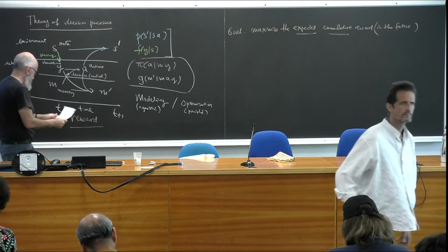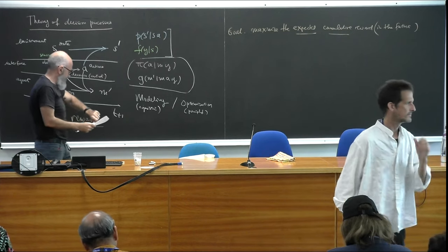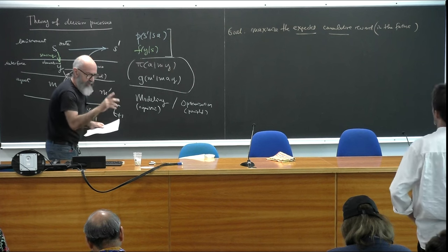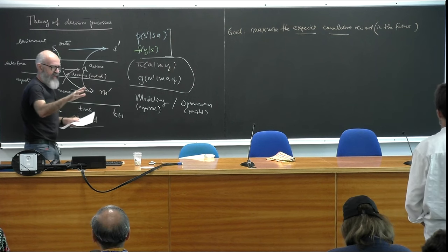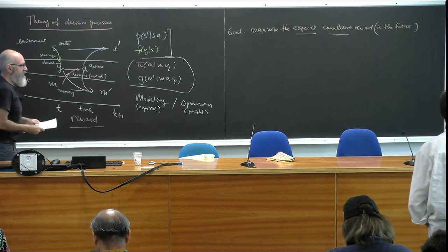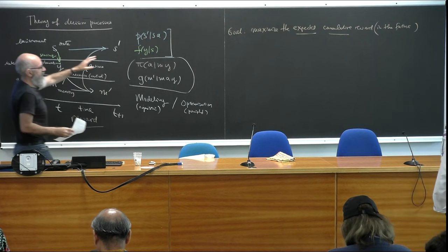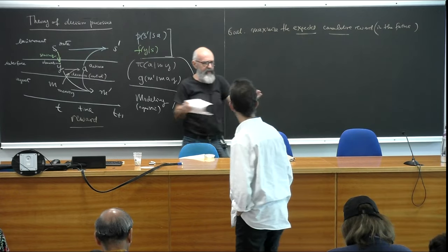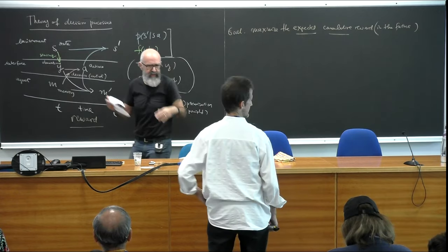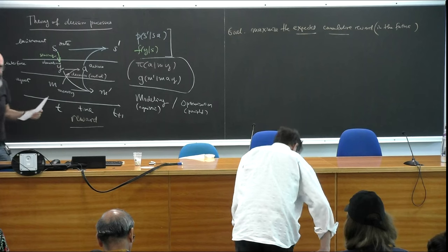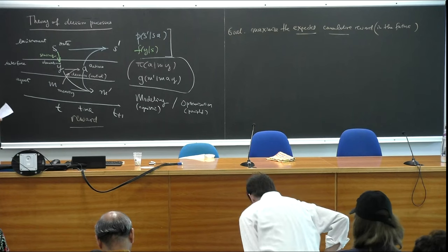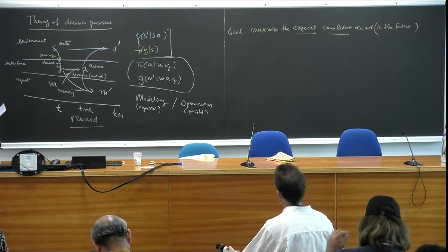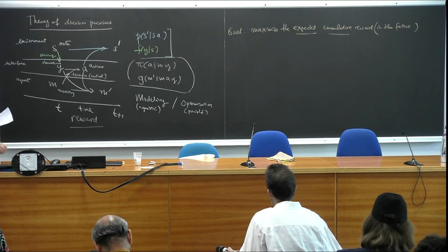An audience member asks: shouldn't we also minimize the variance? This is addressed at the end. This is the so-called risk-neutral approach, in which you care only about expectation values. How to deal with variance and uncertainty will be addressed later.